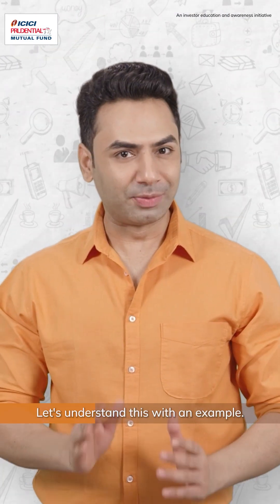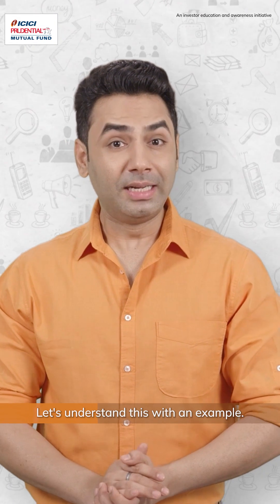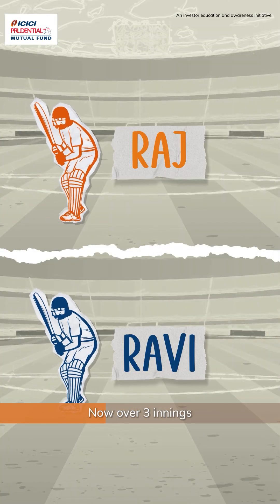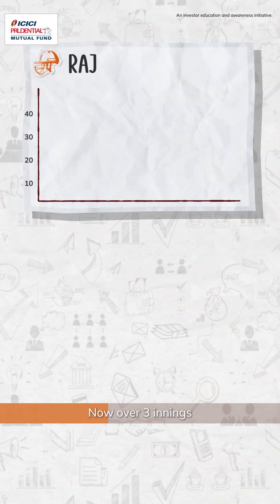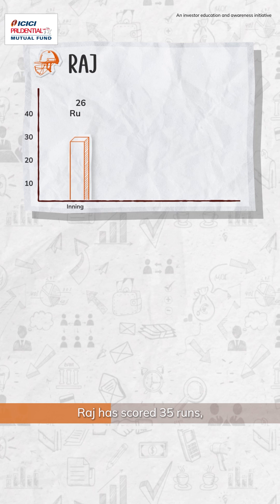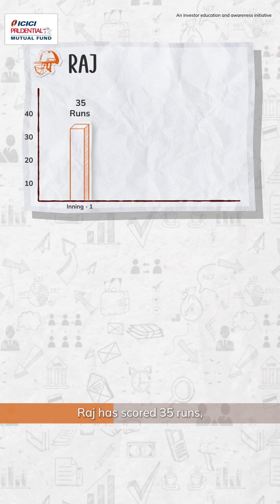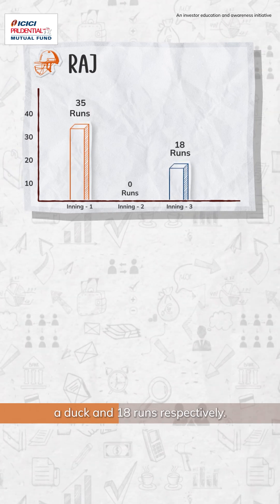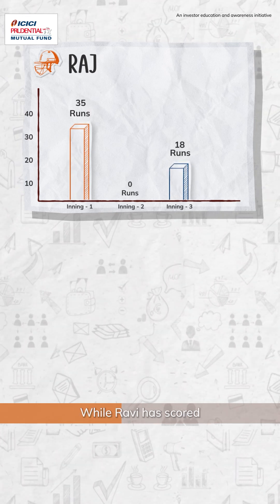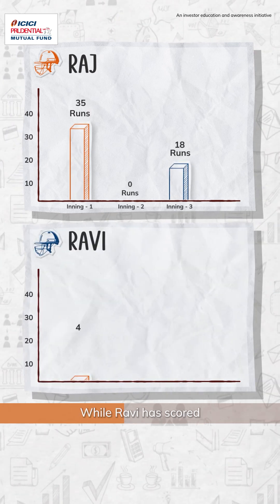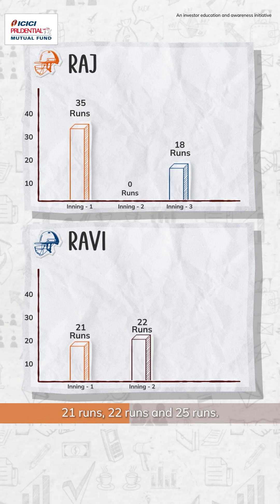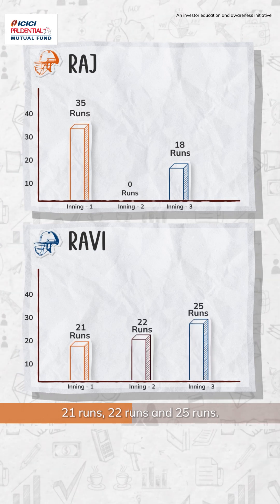Let's understand this with an example. Take two batsmen, Raj and Ravi. Now over three innings, Raj has scored 35 runs, a duck and 18 runs respectively. While Ravi has scored 21 runs, 22 runs and 25 runs.